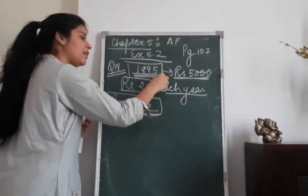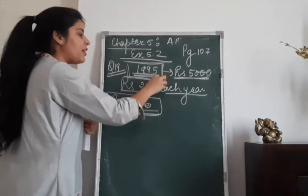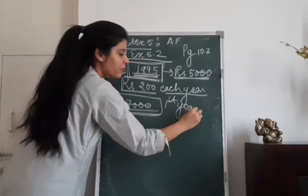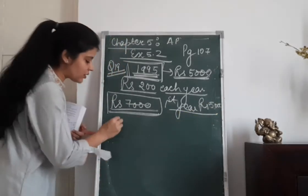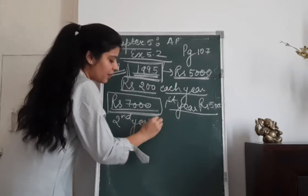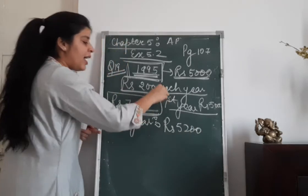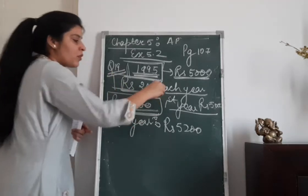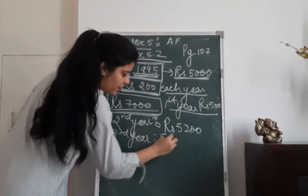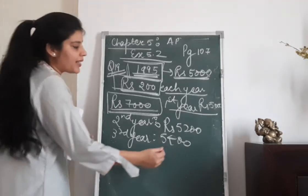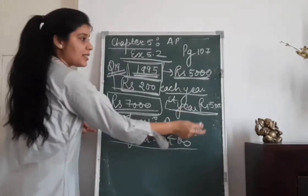If I see 1995 as my first year, then in the first year he is earning rupees 5,000. In the second year he will be earning rupees 5,200, because he is receiving an annual increment of 200 rupees each year. In the third year it will be 5,400. So we can see a pattern: first year 5,000, second year 5,200, third year 5,400.